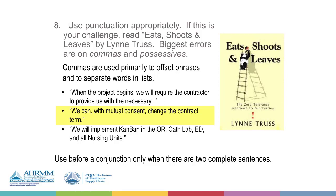The other place we use commas a lot is in a list of items: item 1, item 2, item 3, and item 4. There's often confusion about whether you use a comma before the 'and.' The answer is it's optional — you can use it or not — but the key is consistency. If you're going to use it before the 'and,' use it all the time. If you're not, don't use it ever. I find it easier to always use it consistently, and then there's never an error.